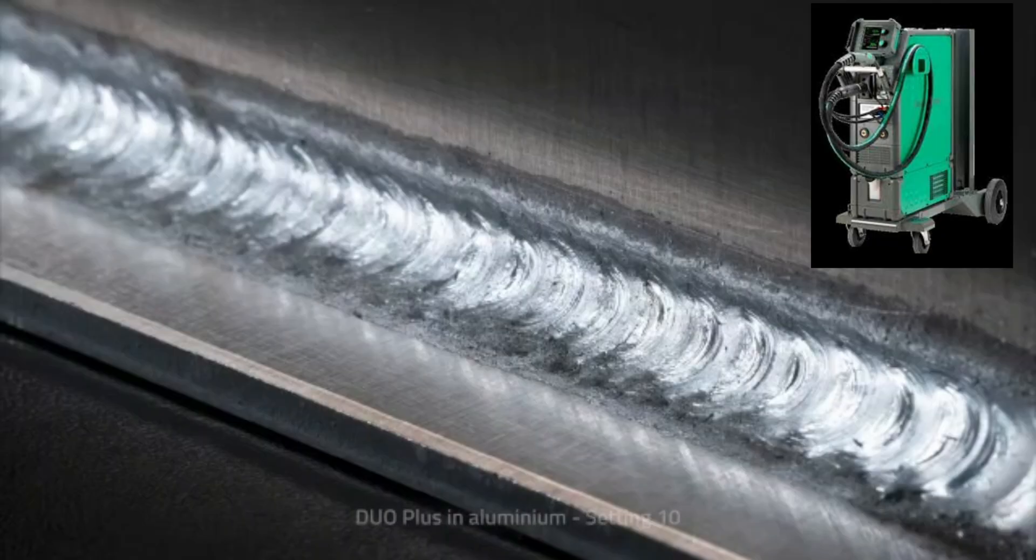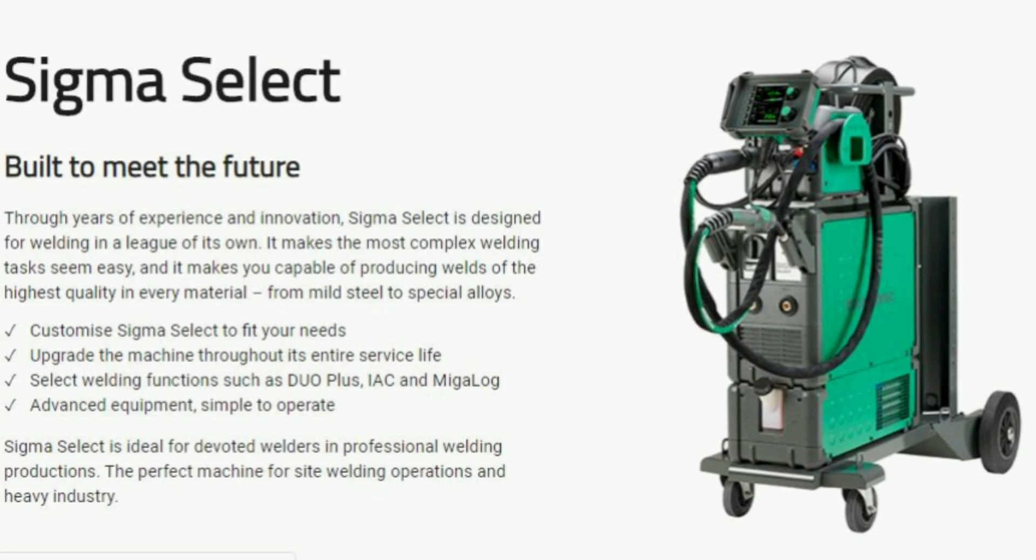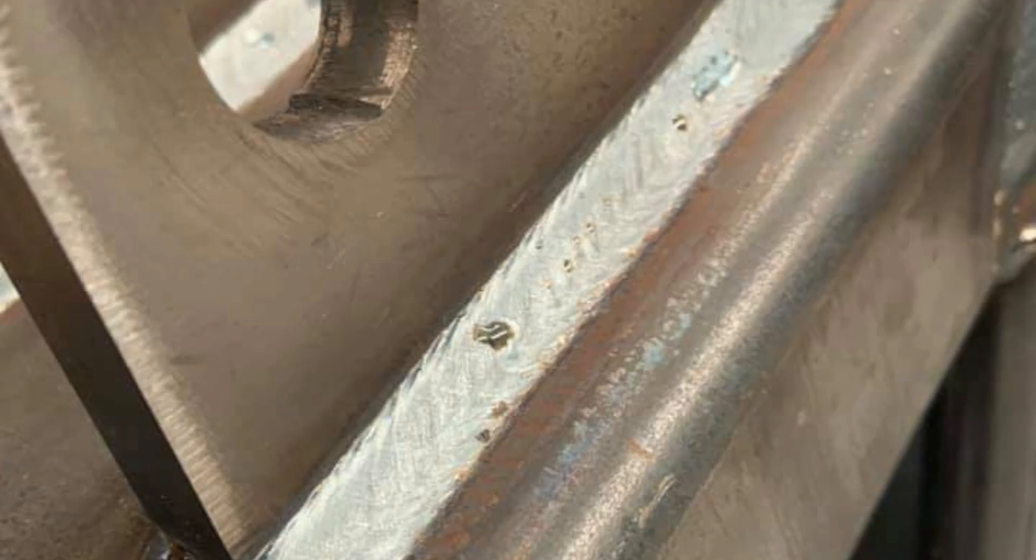Sigma Select is designed for welding in a league of its own. It makes the most complex welding tasks seem easy, and it makes you capable of producing welds of the highest quality in every material, from mild steel to special alloys.